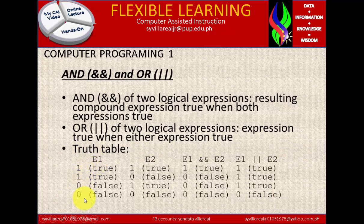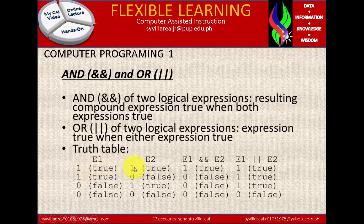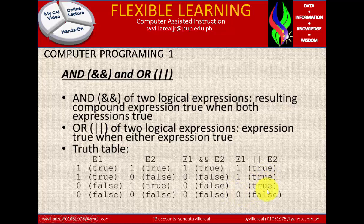In the truth table, expression 1 values are: 1, 1, 0, 0. Expression 2 values are: 1, 0, 1, 0. For AND (multiplication), E1 AND E2: 1×1=1 (true), 1×0=0 (false), 0×1=0 (false), 0×0=0 (false). That's why AND uses multiplication. For OR (addition): 1+1=1 (true), 1+0=1 (true), 0+1=1 (true), 0+0=0 (false), giving answers of true, true, true, false. Memorize this.